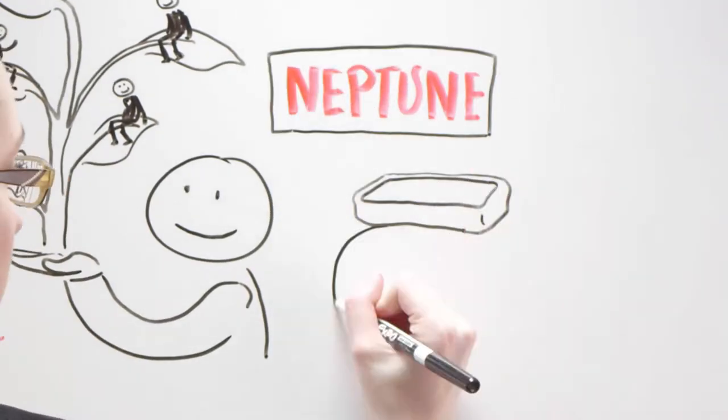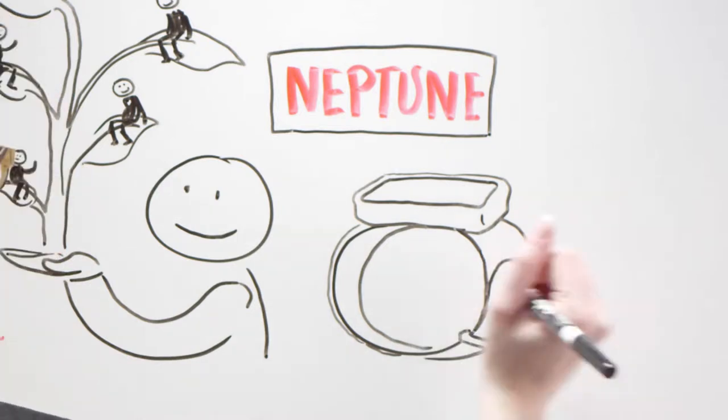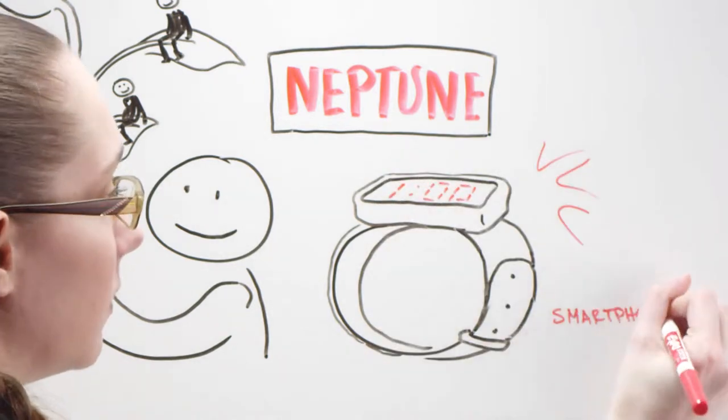Right now, a company called Neptune is raising seed money through Kickstarter, with plans to beat Apple to making a smartphone the size of a watch.